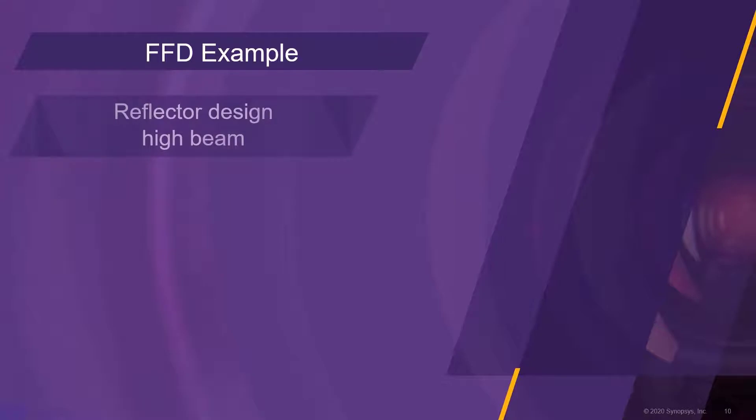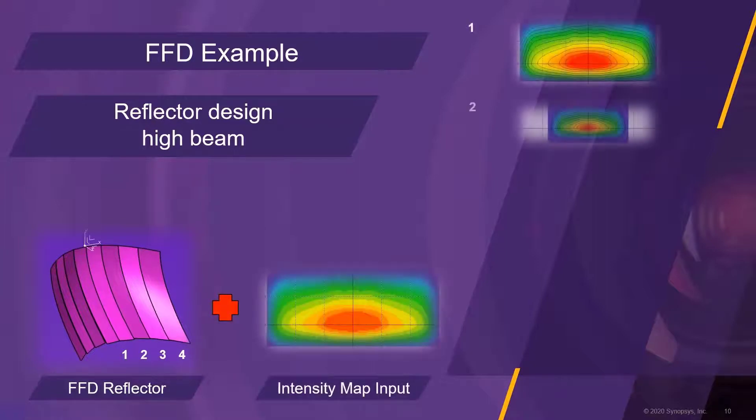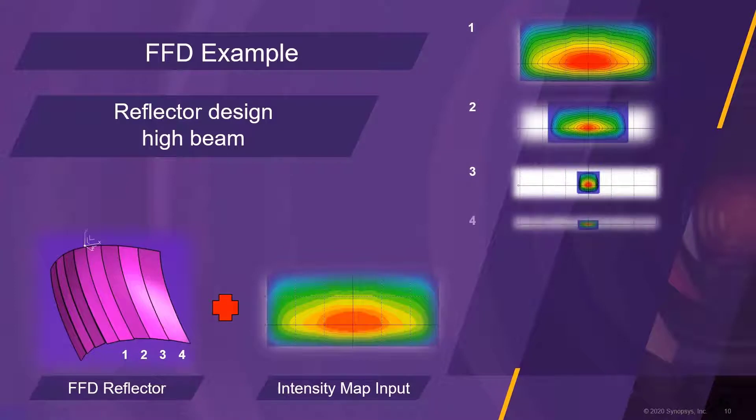In this example, a high beam reflector is designed by providing four predefined light distributions as input to the freeform designer. FFD then adjusted the facets automatically to produce the desired high beam intensity distribution.